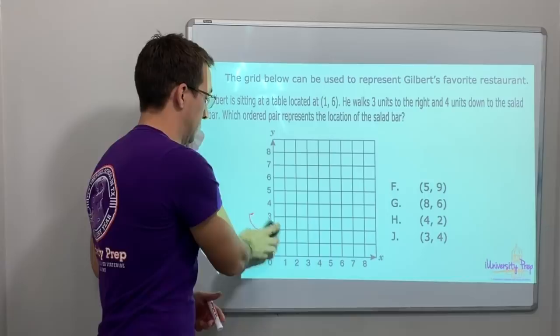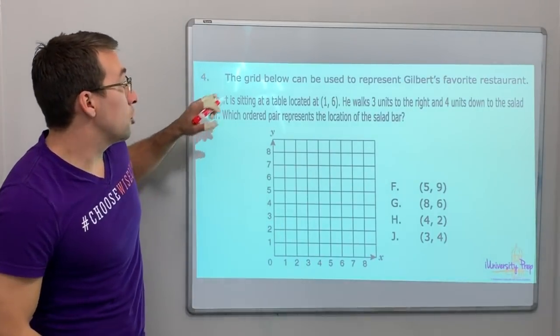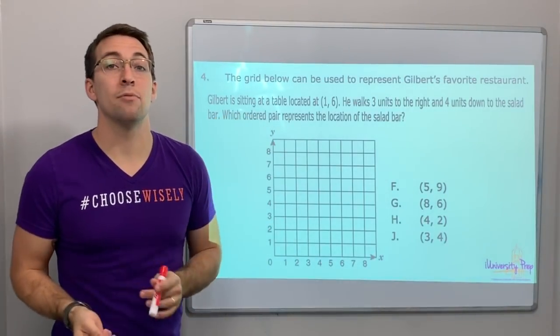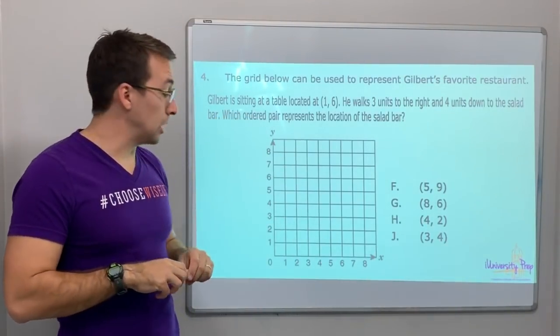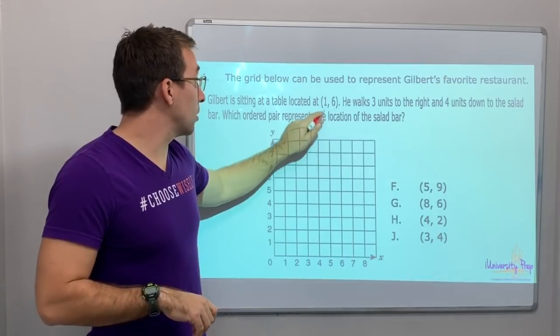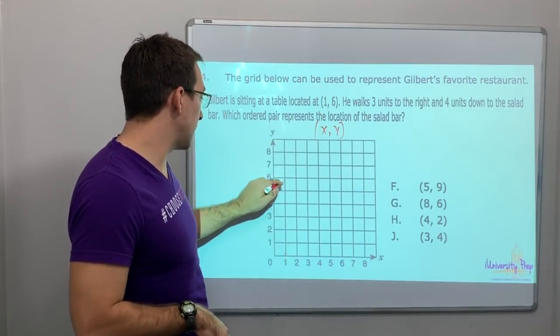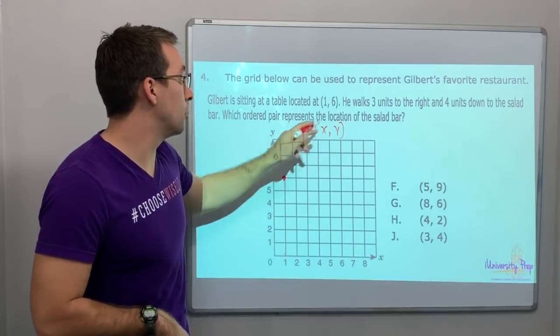Okay. The grid below can be used to represent Gilbert's favorite restaurant. Gilbert is sitting at a table located at one, six. Okay. X or XY, right? One, six. So that's his table.